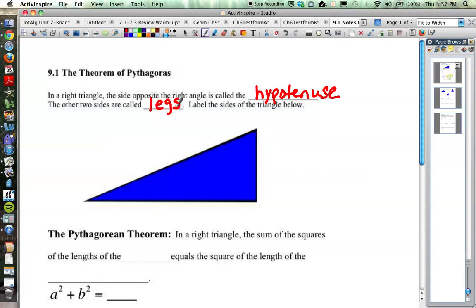So on our right triangle below, we've got a right angle here, and that means that the side opposite would be called the hypotenuse. And we just label the other two sides as the legs of the right triangle. So leg, leg, hypotenuse.